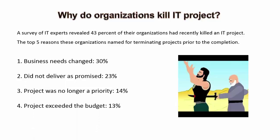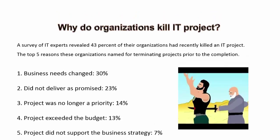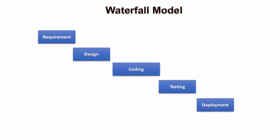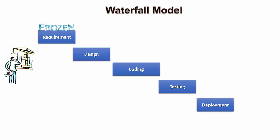Other reasons included: the project did not deliver as promised, the project was no longer a priority, the project exceeded the budget, and the project did not support the business strategy. The traditional waterfall model seems to be okay when requirements can be fully known and frozen — something like building a bridge in civil engineering.